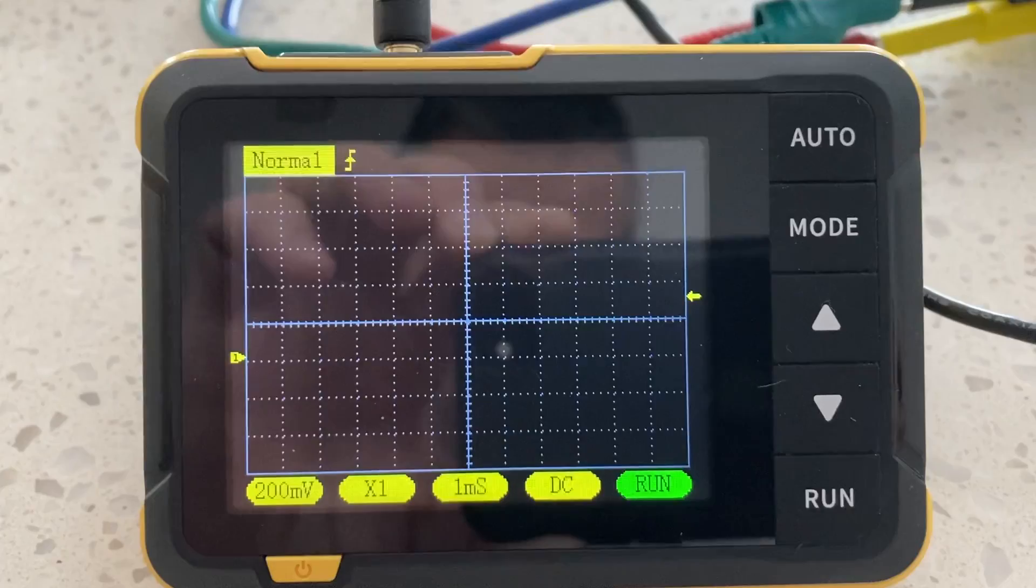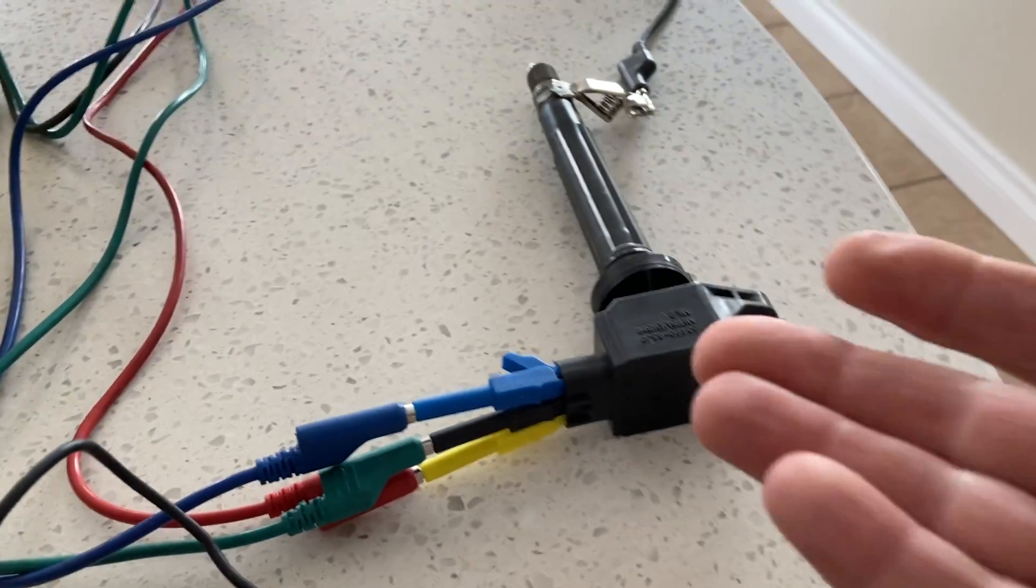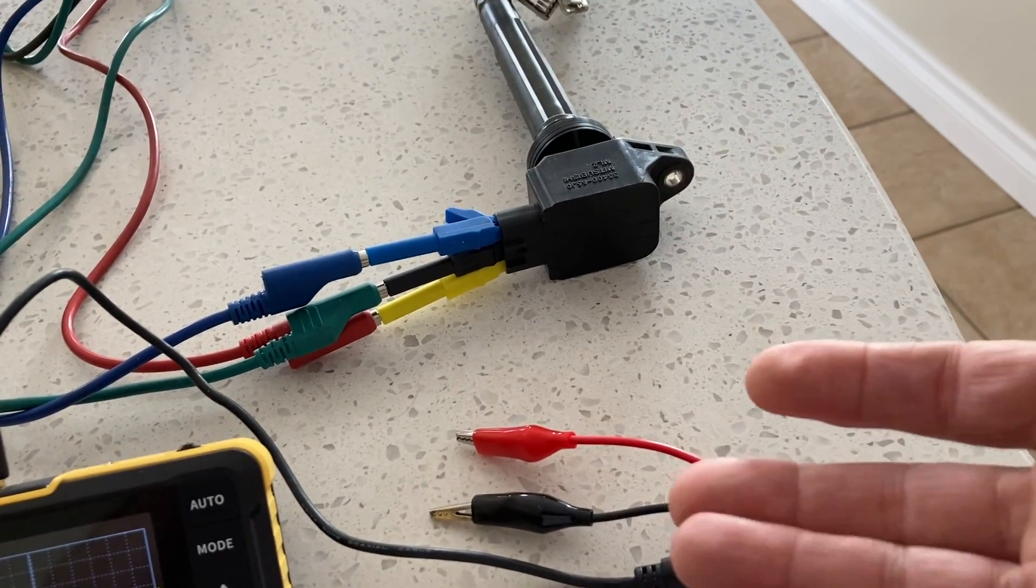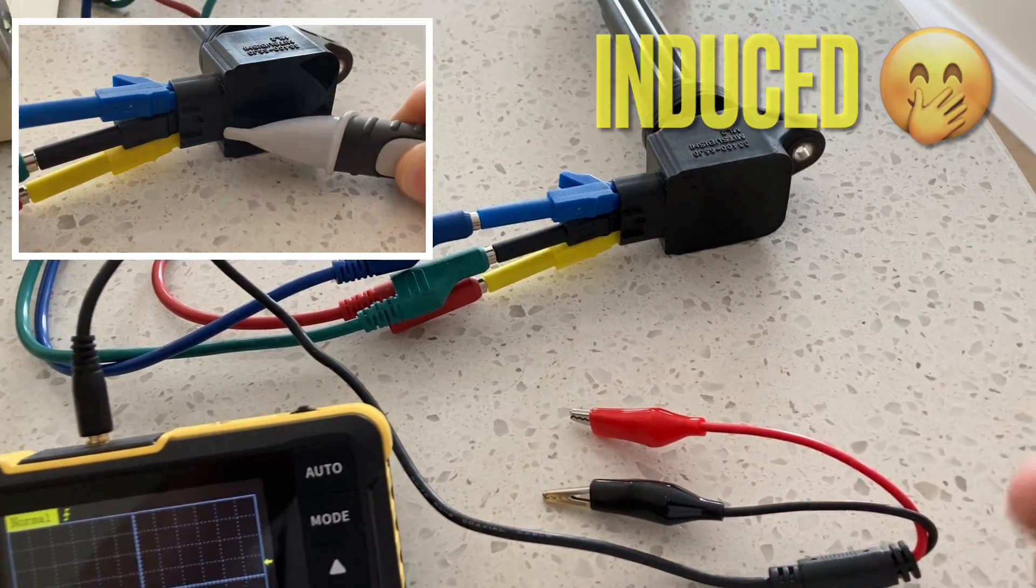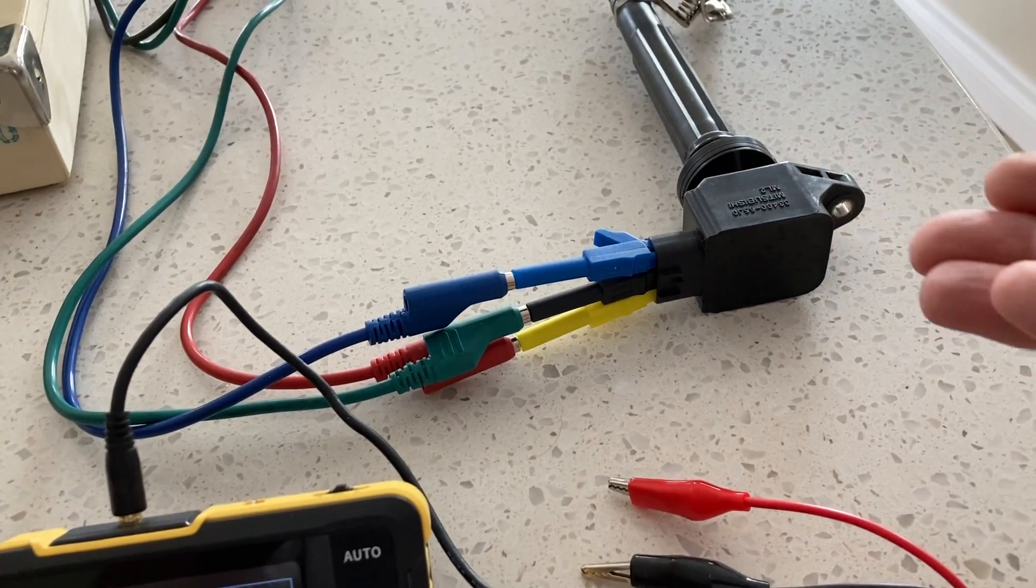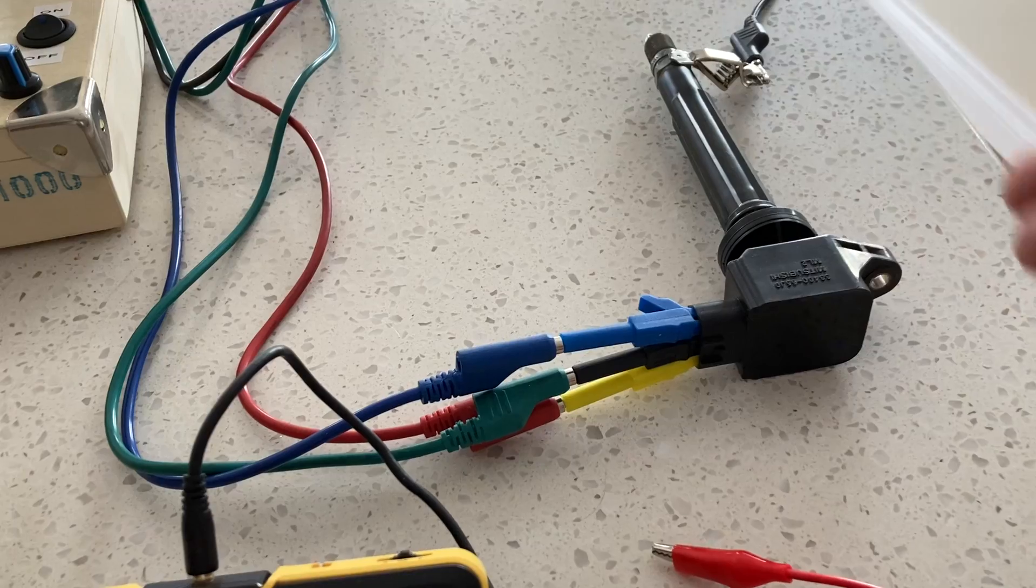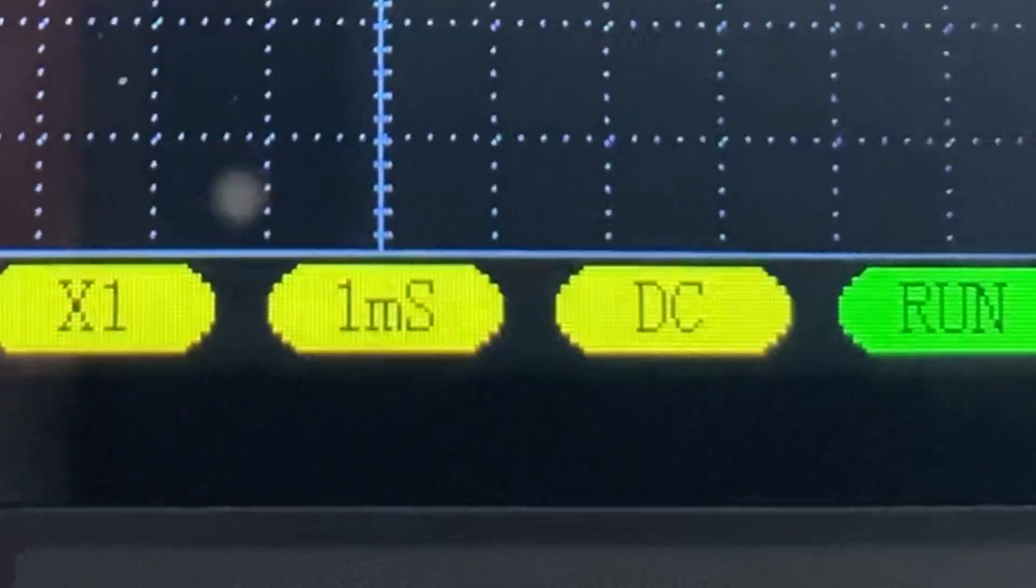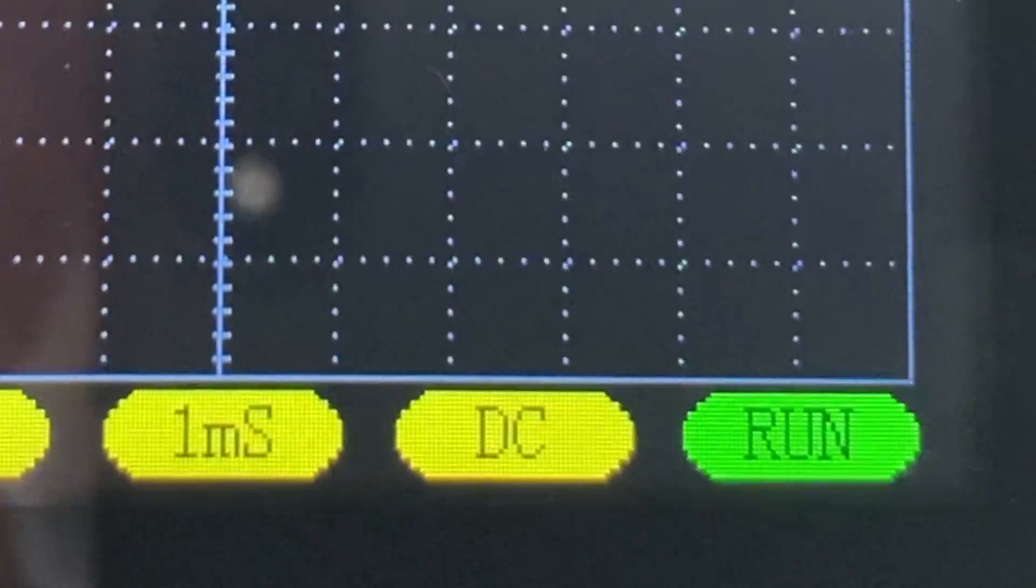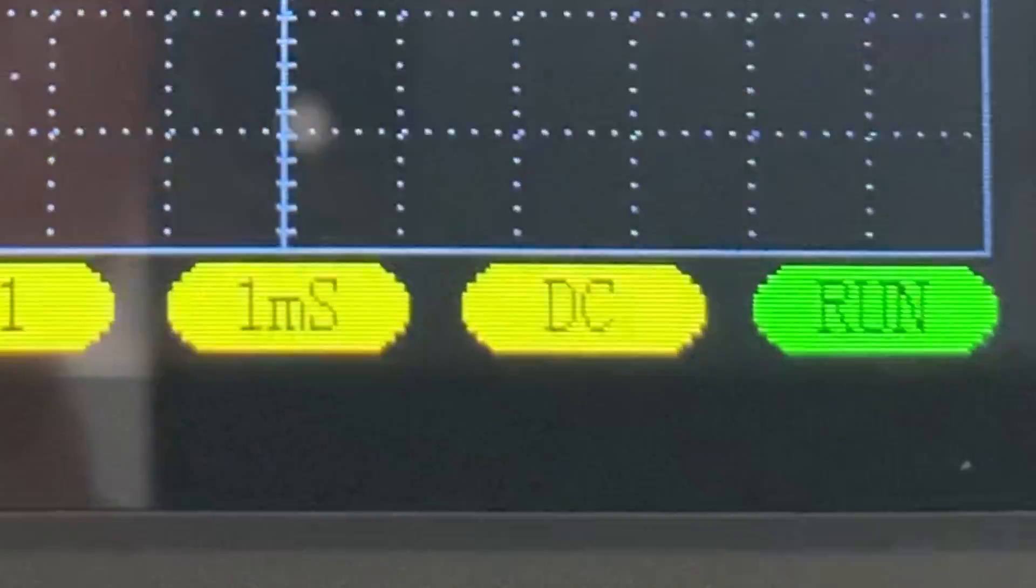And there's no attenuation required because all we're going to do is pick up quite a minuscule inducted signal that will align from the magnetic field that radiates from the coil on plug when it's operating. Back to the settings: one millisecond per division on time base, DC coupled.